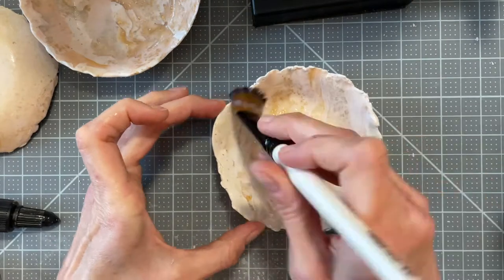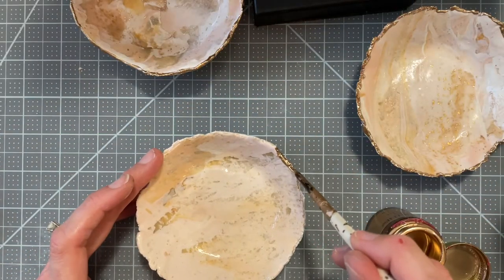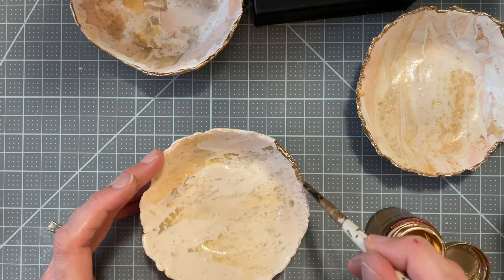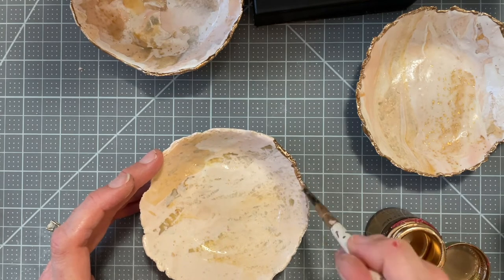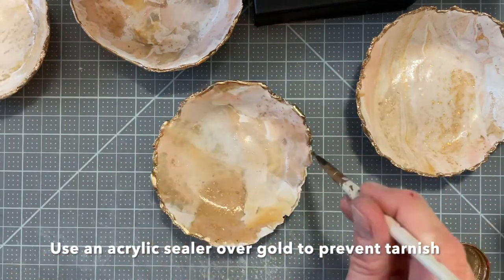When the glaze is dry I use a small firm synthetic brush to apply liquid gold leaf to the edges. The liquid gold leaf takes a couple hours to dry and I let it dry overnight before I wrap and ship these.